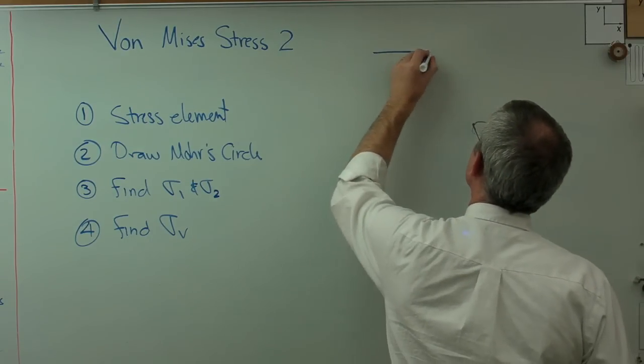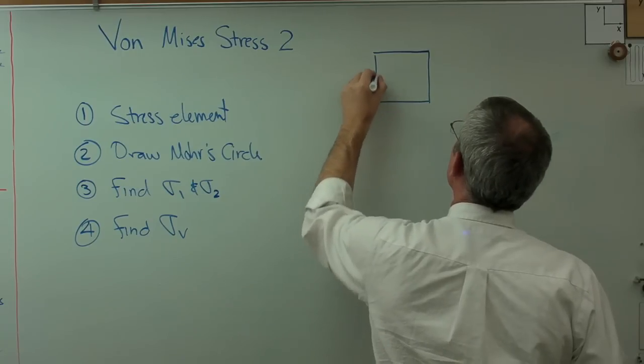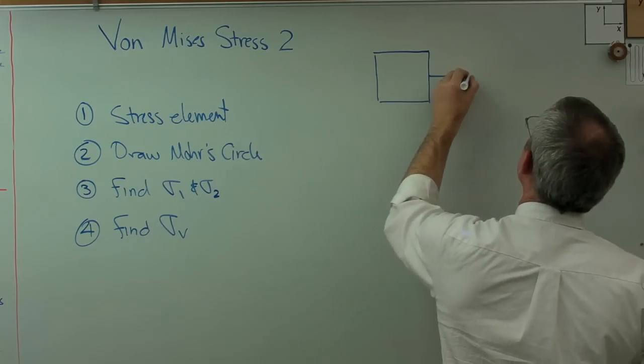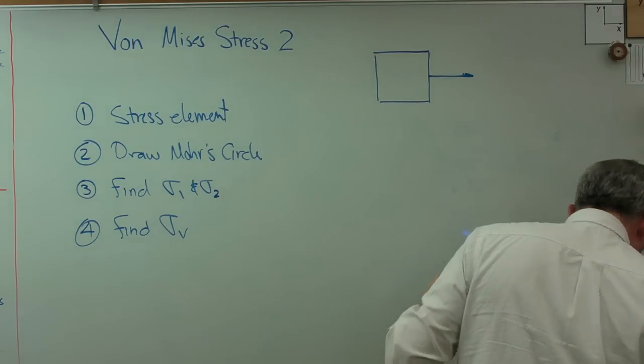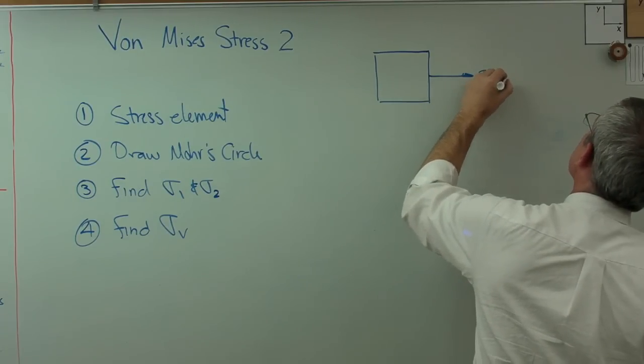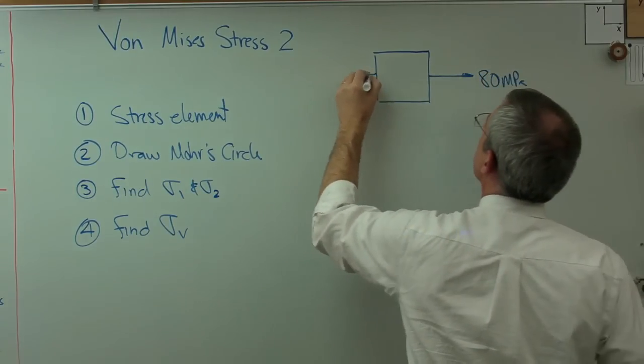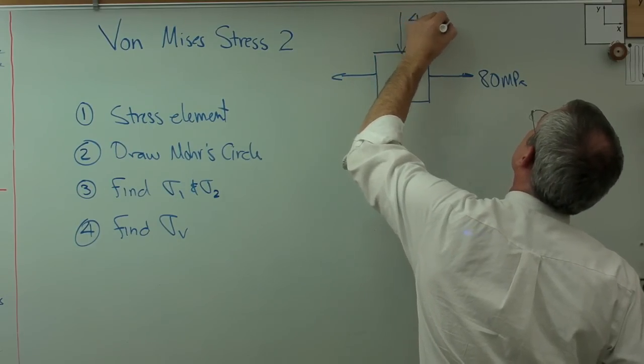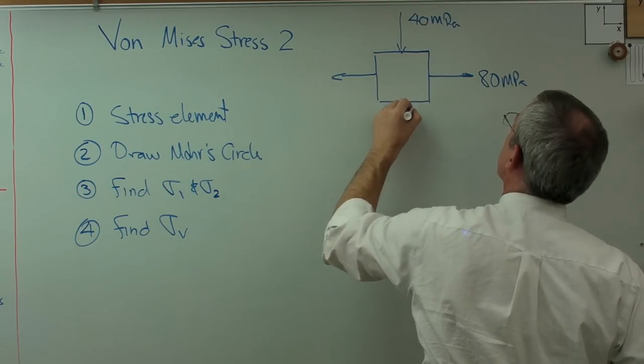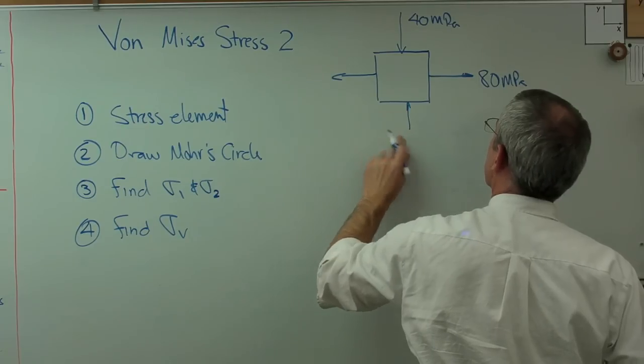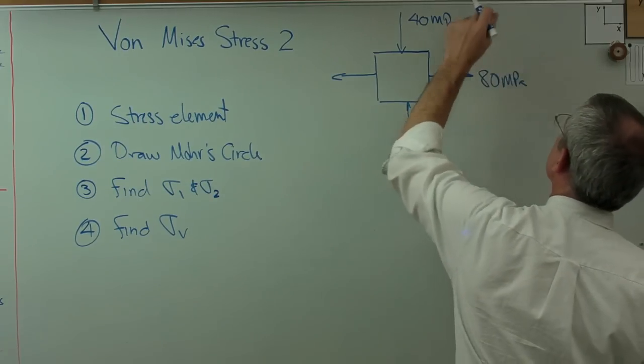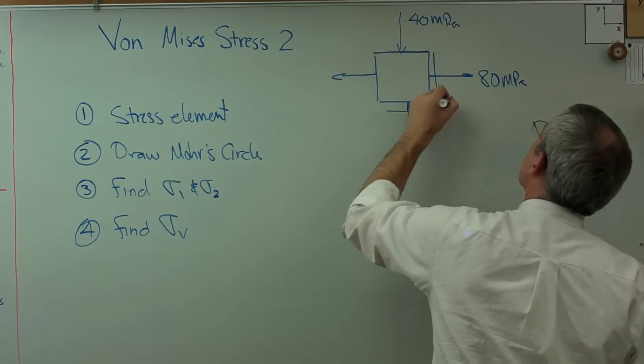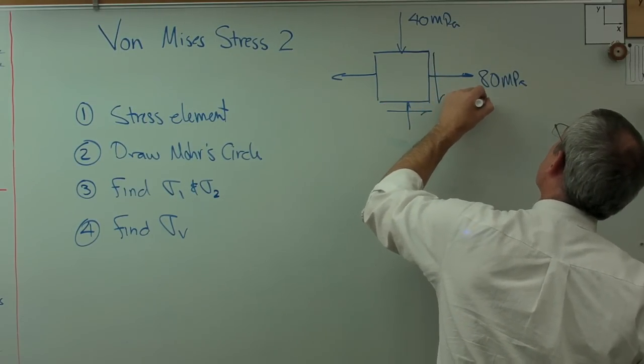We've seen stress elements before. This is related to a problem I found in Beer and Johnson. I modified it a little bit just to keep things interesting. Let's see. This is 80 megapascals there in the x-direction, the same in the y-direction, minus 40 here. So, that's in compression there. So, that's sigma x, sigma y. And then the shear, I'll put positive, and that'll be 25 megapascals.